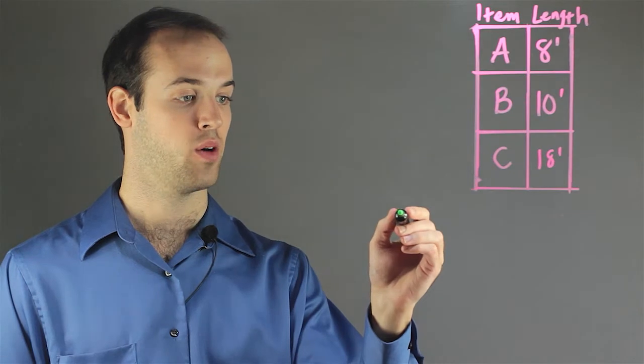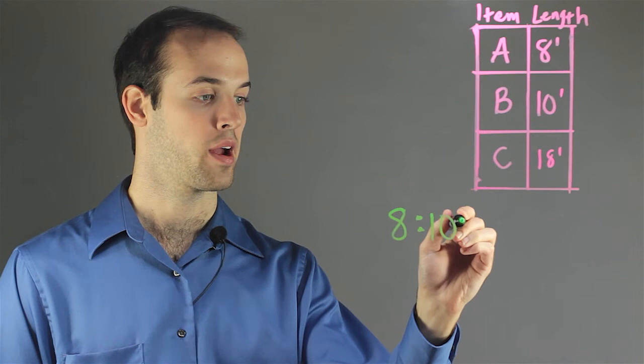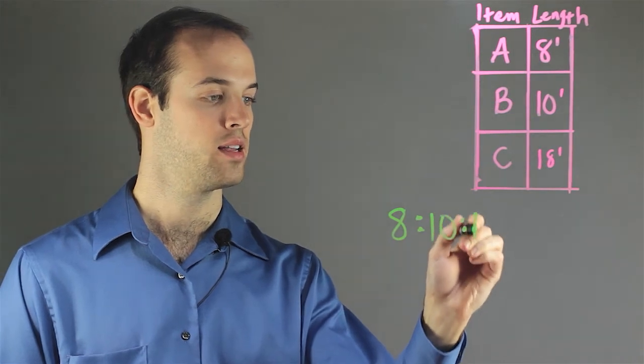Well, we're going to start by writing the lengths out in ratio notation with a colon. So I'm going to write 8 to 10 to 18.